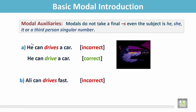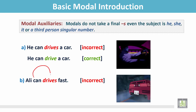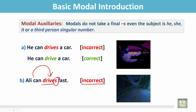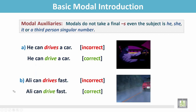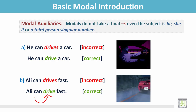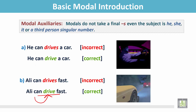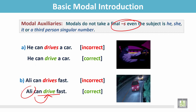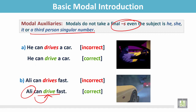Another example: 'Ali can drives fast.' In this sentence, after the modal the verb 'drive' has a final S, so the sentence is incorrect. The correct one is 'Ali can drive fast.' After the modal, the verb is in the simple form — it doesn't take a final S, even when the subject is a third person singular number.